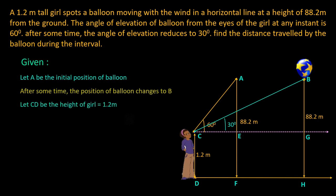So, we know that the height of the girl is 1.2 meter. The angle of elevation when the balloon is at point A is 60 degree, and when it moves to point B, it is 30 degree. The height of the balloon from the ground is given. We have to find the distance traveled by the balloon from A to B.